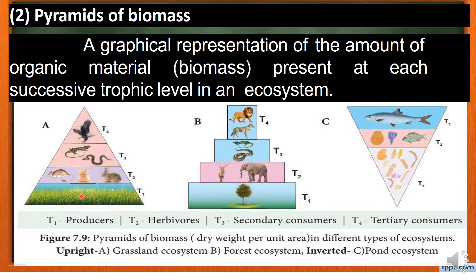In the grassland ecosystem, the pyramid of biomass represents the amount of organic material. The producers have the highest biomass, then primary consumers, and the top consumers have the lowest amount of biomass. That is why this pyramid of biomass is an upright pyramid.